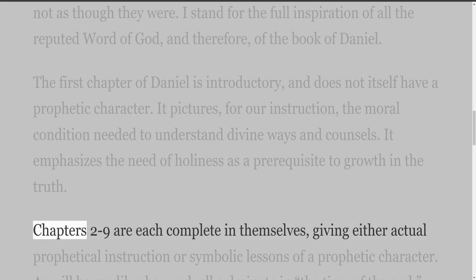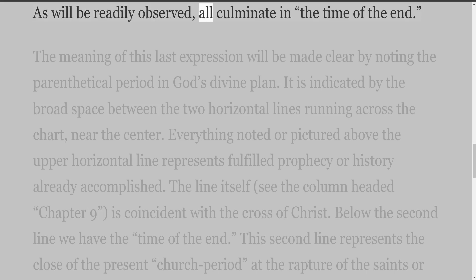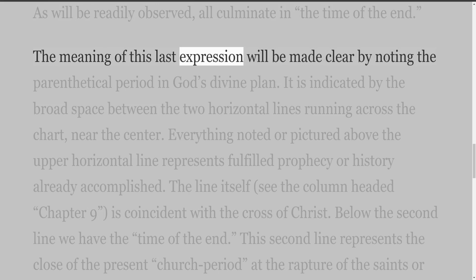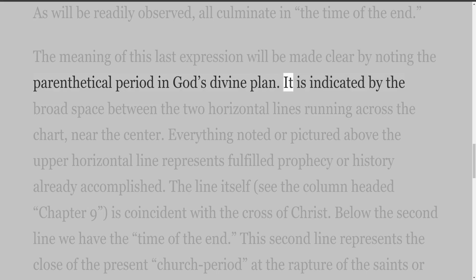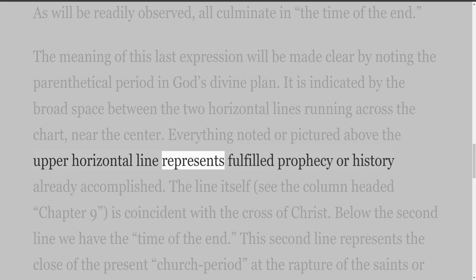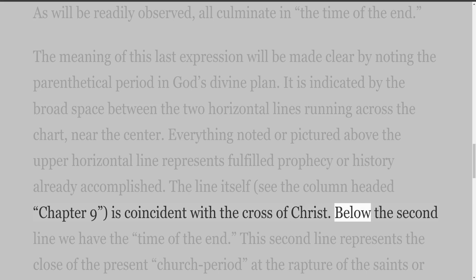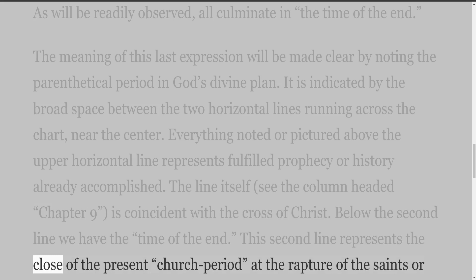Chapters two to nine are each complete in themselves, giving either actual prophetical instruction or symbolic lessons of a prophetic character. As will be readily observed, all culminate in the time of the end. The meaning of this expression will be made clear by noting the parenthetical period in God's divine plan, indicated by the broad space between the two horizontal lines running across the chart near the center. Everything pictured above the upper horizontal line represents fulfilled prophecy or history already accomplished. That line, in the column headed Chapter 9, is coincident with the cross of Christ.